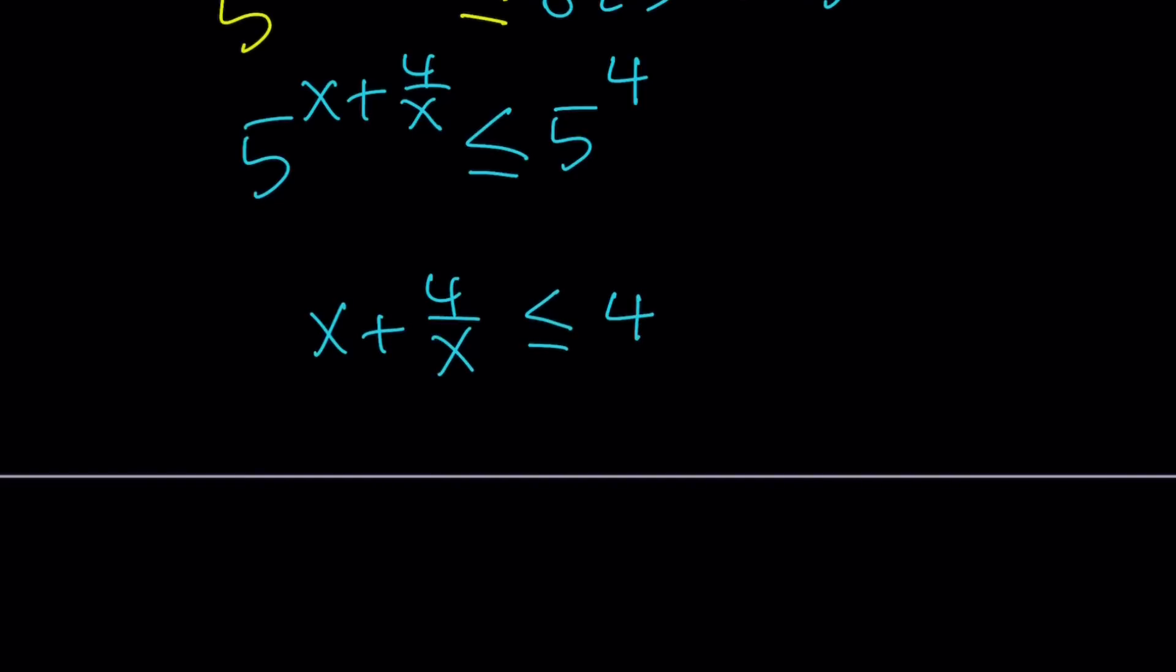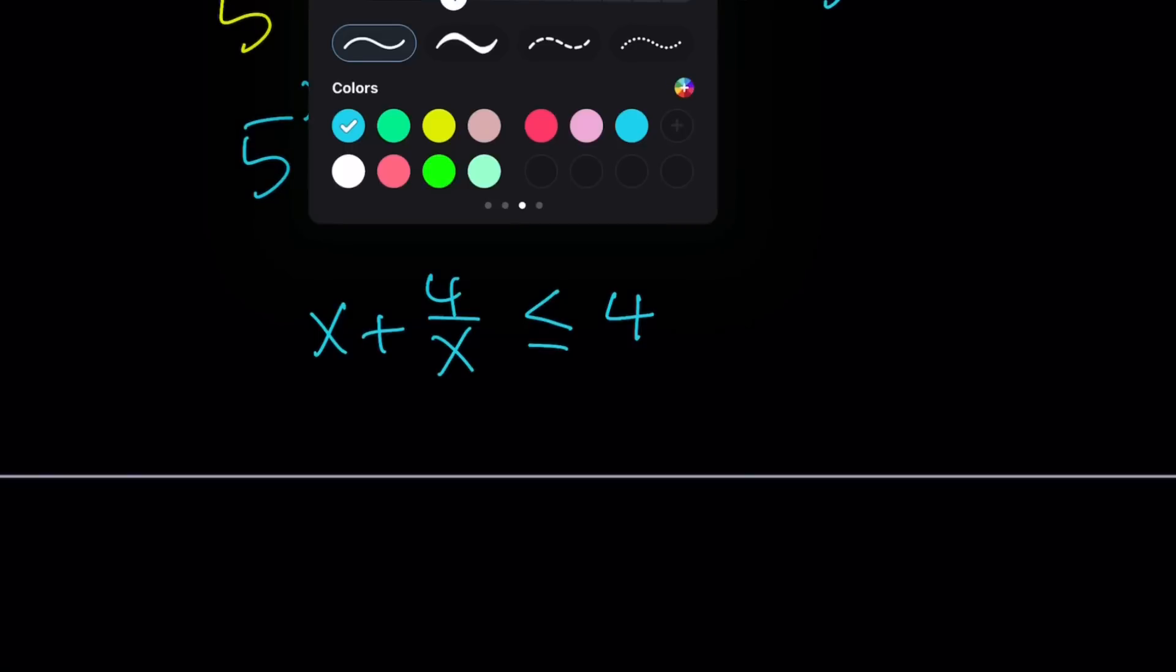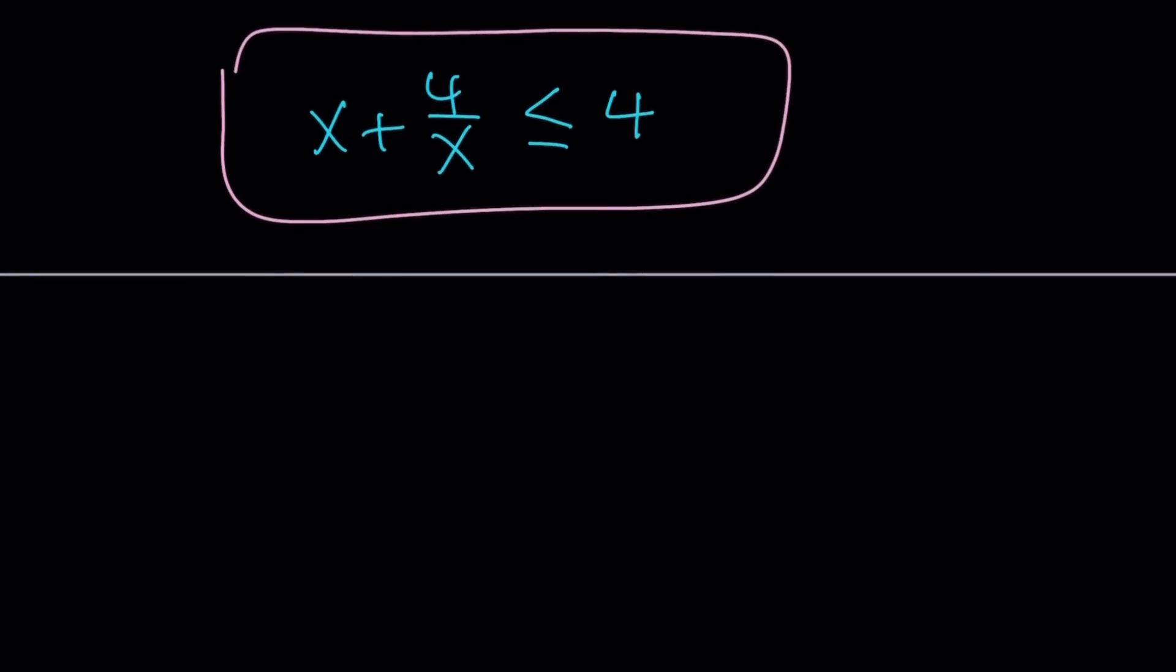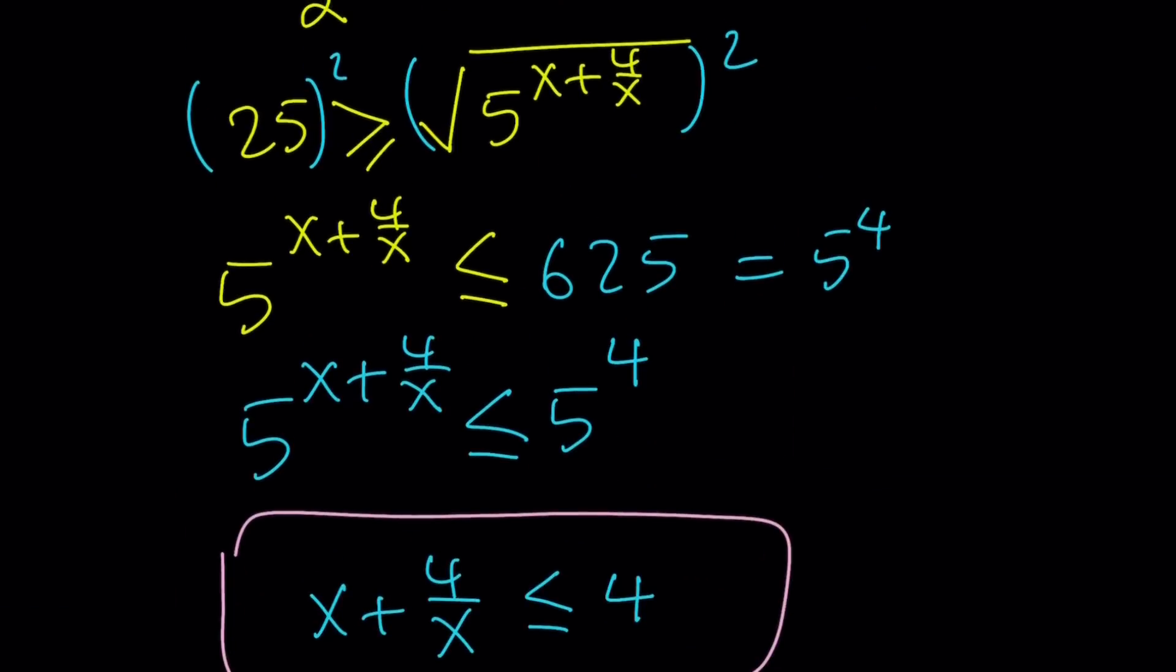Now we have the inequality 5 to the power x plus 4 over x is less than or equal to 5 to the 4th power. We can safely say from here that if x is positive, then x plus 4 over x is supposed to be less than or equal to 4. Now let's take a look at x and 4 over x because that should give us something interesting.